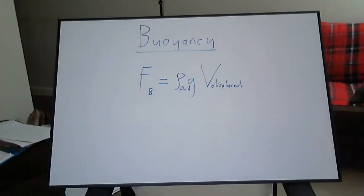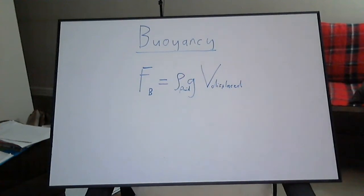This is an introduction to buoyancy. As a summary, the force of buoyancy on an object is equal to the density of the fluid it is immersed in times gravity times the volume displaced by the object within the fluid.